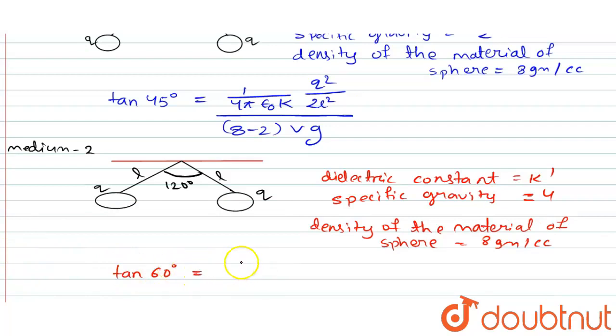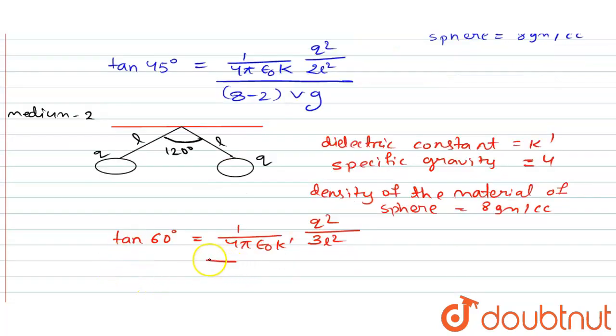Now you can write tan 60° = (1/4πε₀K')(q²/3L²) divided by (8-4)Vg.